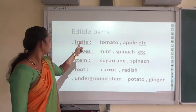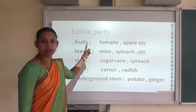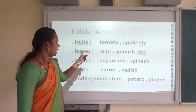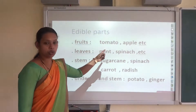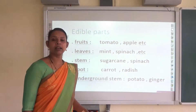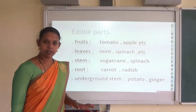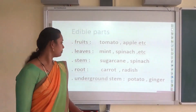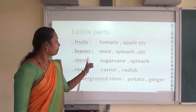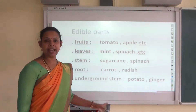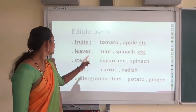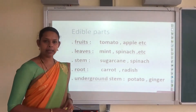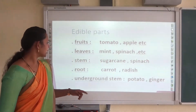If you think about fruits, the parts which are edible like tomato, apple, greens, etc. — the fruits can be edible. And in the case of mint, spinach, etc., its leaves are edible.